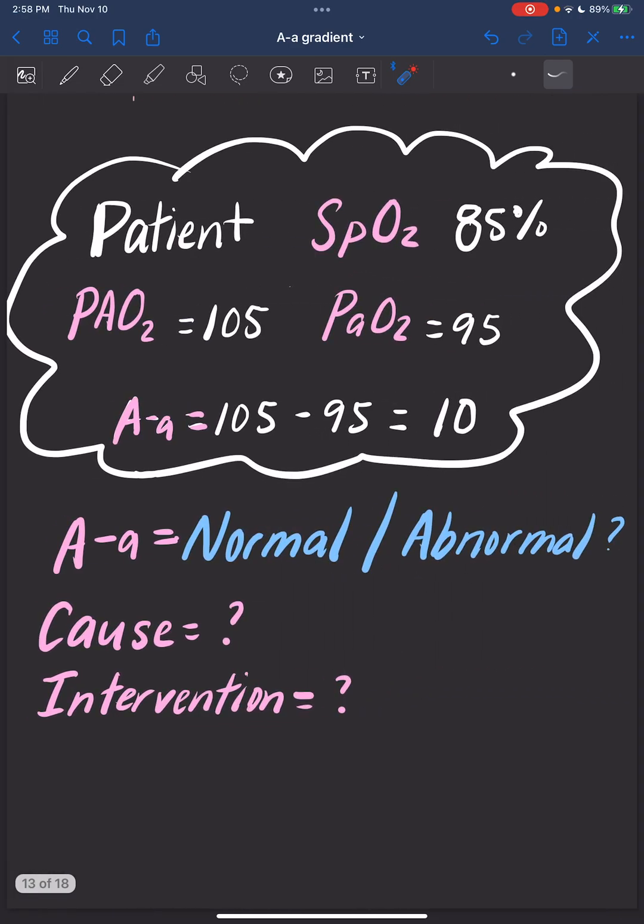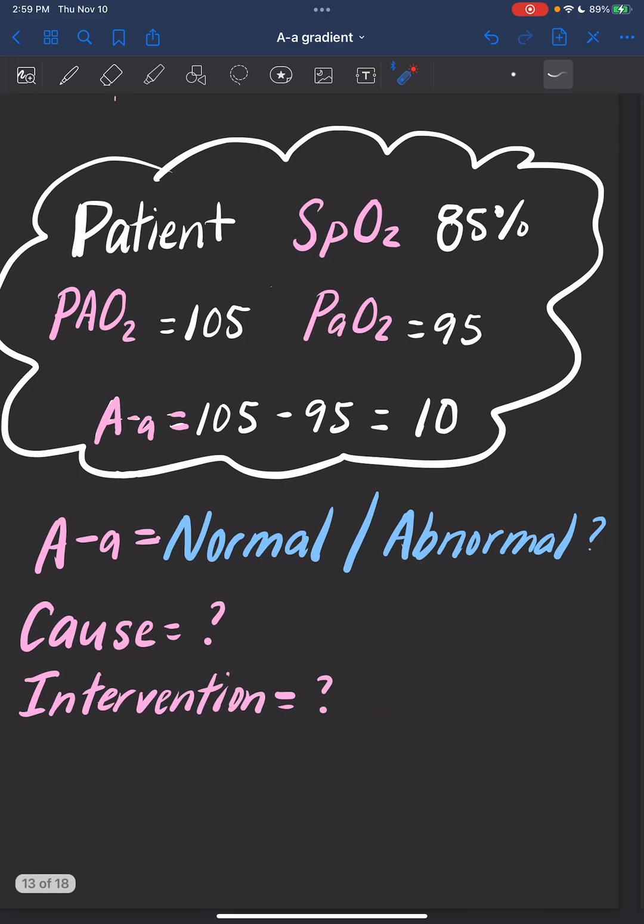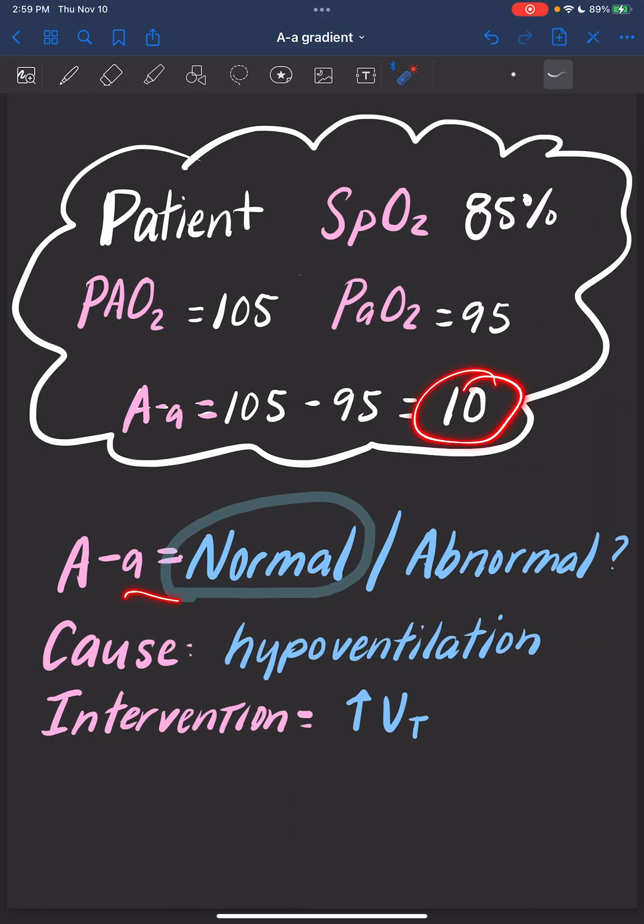Let's practice this concept. Our patient's pulse ox is 85%, the alveolar oxygen is 105, and the arterial is 95. Calculating their A-a gradient gives us an A-a gradient of 10. Is this normal or abnormal? What is a cause and what can we do? You're right. 10 is a normal A-a gradient. Remember, our A-a gradient is less than 15. Because it's 10, our likely cause of desaturation is hypoventilation. What we can do is increase our tidal volume.